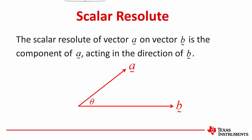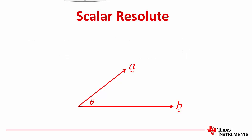The scalar resolute of vector A on vector B is the component of A acting in the direction of B. But what does this actually mean? The black line shows the scalar resolute of vector A on vector B. Notice that the black line has no arrow, symbolic of the fact that it is a length and not a vector.